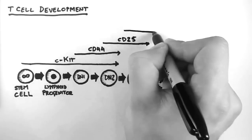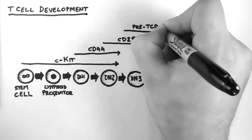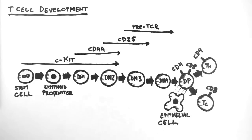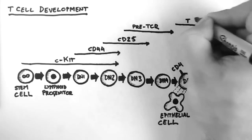Now two other markers which are very important in T cell development are the pre-T cell receptor, abbreviated pre-TCR, which is expressed at the double negative 3 stage and the double negative 4 stage. After which it becomes the T cell receptor, abbreviated TCR.